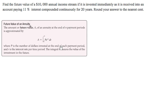To find the future value of an annuity at the end of n payment periods, we're going to use this integral. So to find that future value A, it's going to be the integral from 0 to n, where n is the number of payment periods.